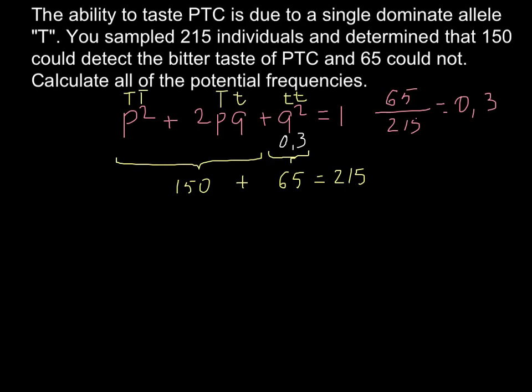So we also know that all the alleles T and all the alleles small t, so capital T plus small t, would equal to 1. So if you take a look here, we have one, two and three genetic groups, but only two alleles, capital T and small t. That's why all dominant alleles plus all recessive alleles would equal to 1. And of course, if these two allele groups make three genotypic groups, this also would equal to 1.